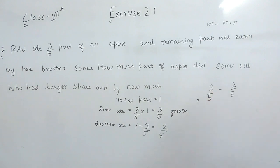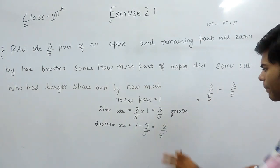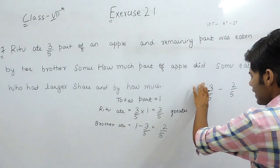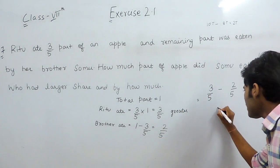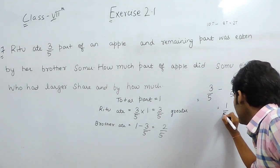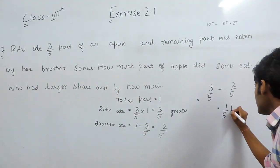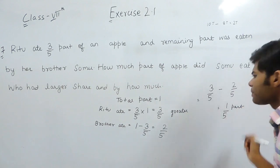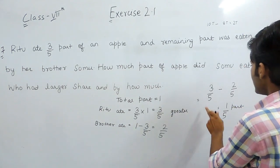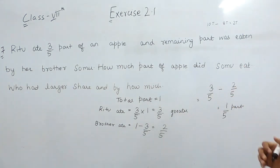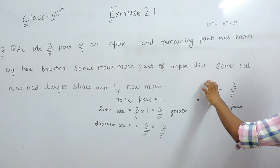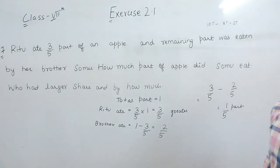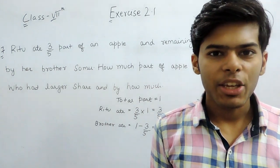Here also in this question, we will do the same thing. Ritu is having 3 by 5 part, which is the greater one. Her brother is having 2 by 5 part, which is the lesser one. We will subtract these. By 1 upon 5 part, the share of Ritu is greater than the share of her brother. Or we can say that by 1 upon 5 part, the share of her brother is less than her sister. This is how it comes to our discussion. Thank you.